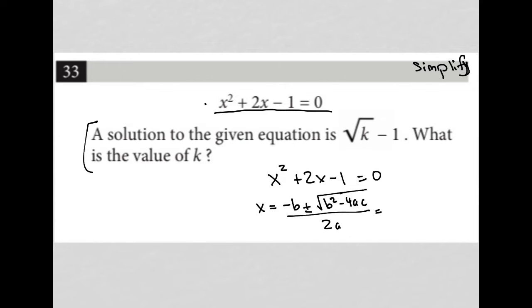I would get from that that x equals negative b would be negative 2. This is a, this is b, this is c. There's no number in front of the x, which makes it a 1.